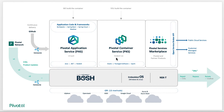BOSH maintains all the services and infrastructure provided by Pivotal. It takes care of high availability, scalability, and security for the complete environment, and is responsible for connecting to various clouds like vSphere, OpenStack, AWS, Google Cloud, and Azure Stack, with the help of the CPI — the Cloud Provider Interface.